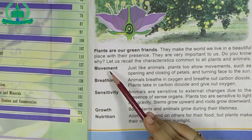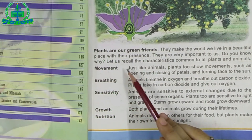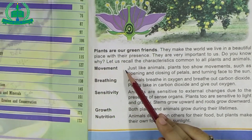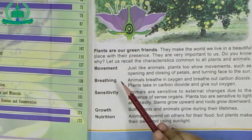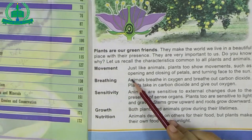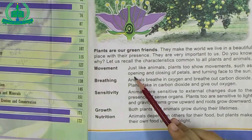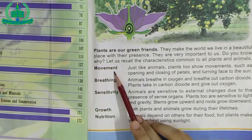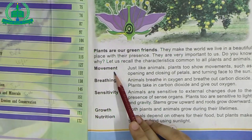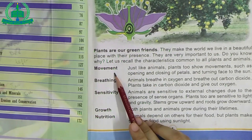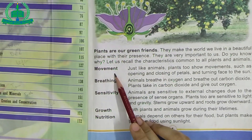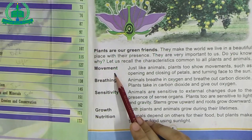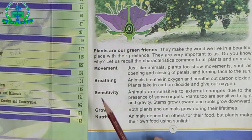Next: Movement. What is movement? All living things show movement. Plants show their movement by opening and closing of petals, and by turning their face to the sun, like a sunflower.